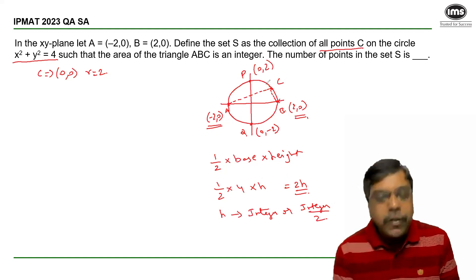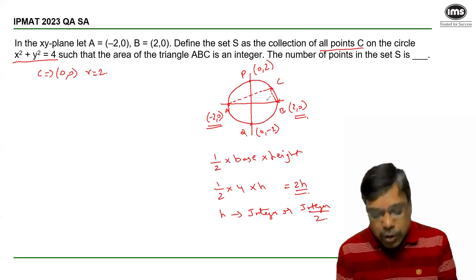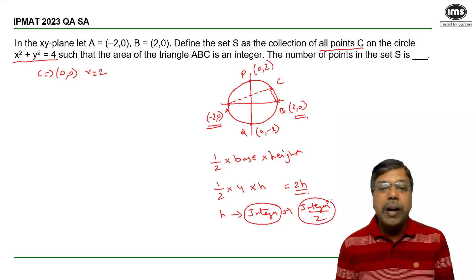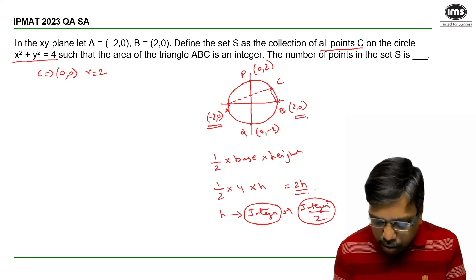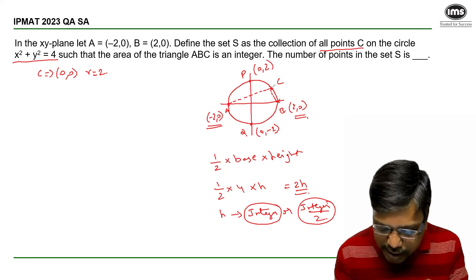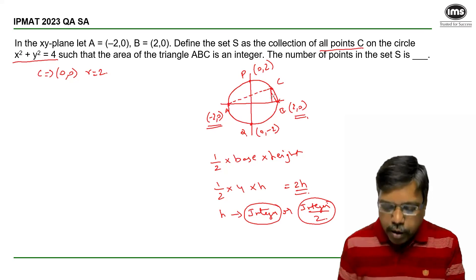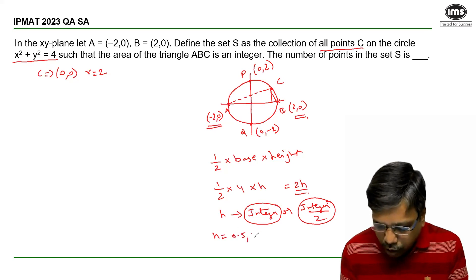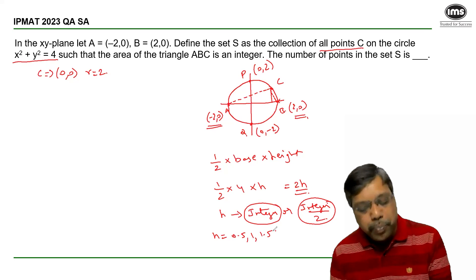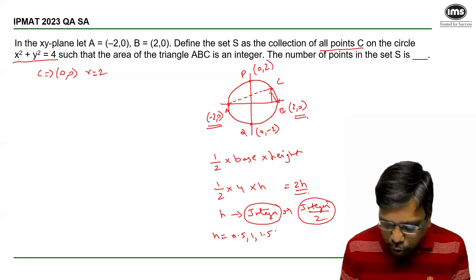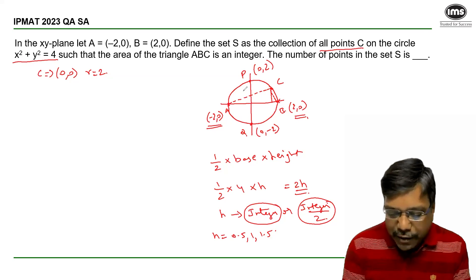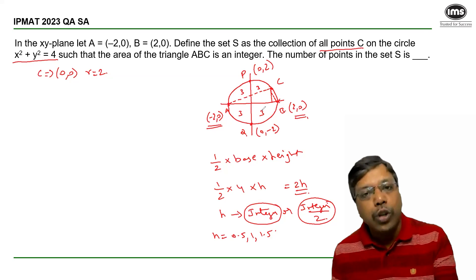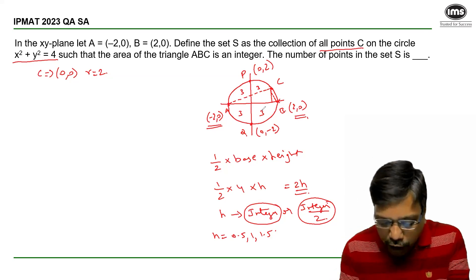Now can you think of how many points on the circumference of the circle which are either of the form of an integer or on the form of integer by 2? So if I say, for example, the least value I can think of is 0.5. So I can say H can be 0.5 or 1 or 1.5. So if I have 3 points in the first quadrant, then I will have 3 points in the second quadrant, 3 points in the third quadrant, 3 points in the fourth quadrant. So which means I have 12 points till now.